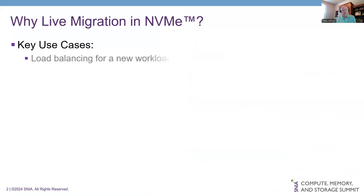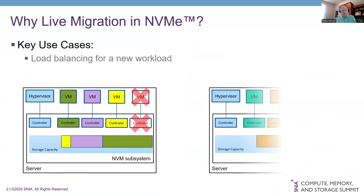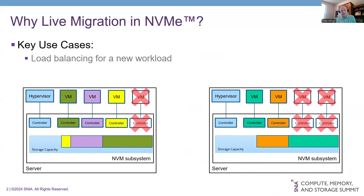The first use case is balancing workloads within the data center. I'm using simple diagrams showing one or two servers. In my examples, the servers will have one NVM subsystem that has multiple controllers attached. Those controllers could be physical functions or SR-IOV, because when we're developing live migration, we're trying to make it independent of the controller type. Within the host side, we're going to have a hypervisor connected to a controller, managing the virtual machines. Those virtual machines will have one attached namespace, and there will be namespaces attached to the controllers with storage capacity.